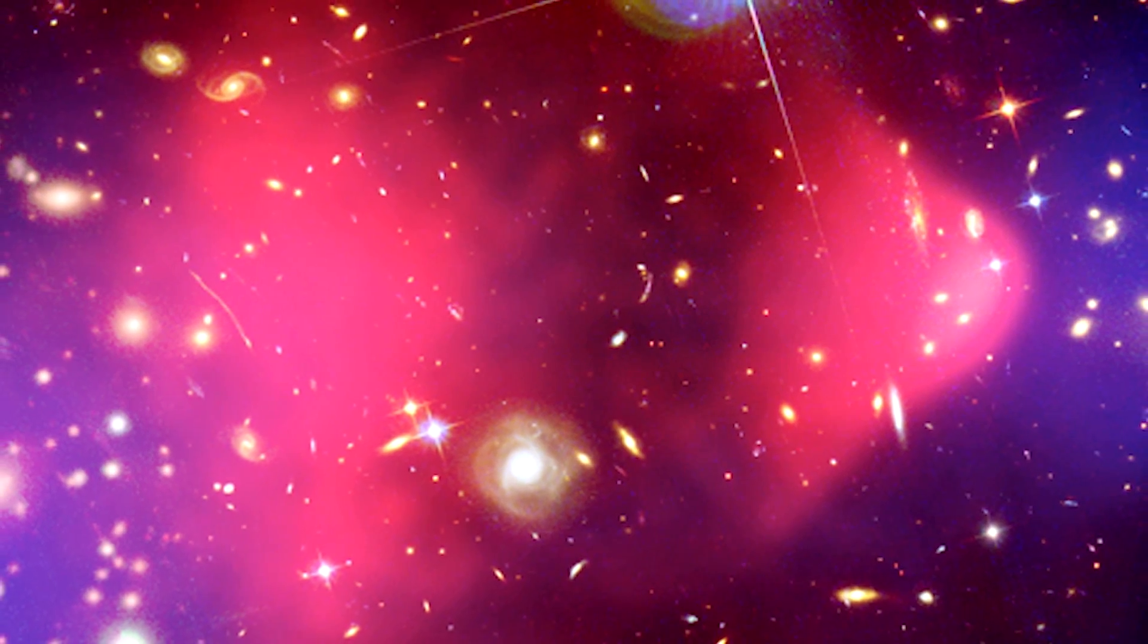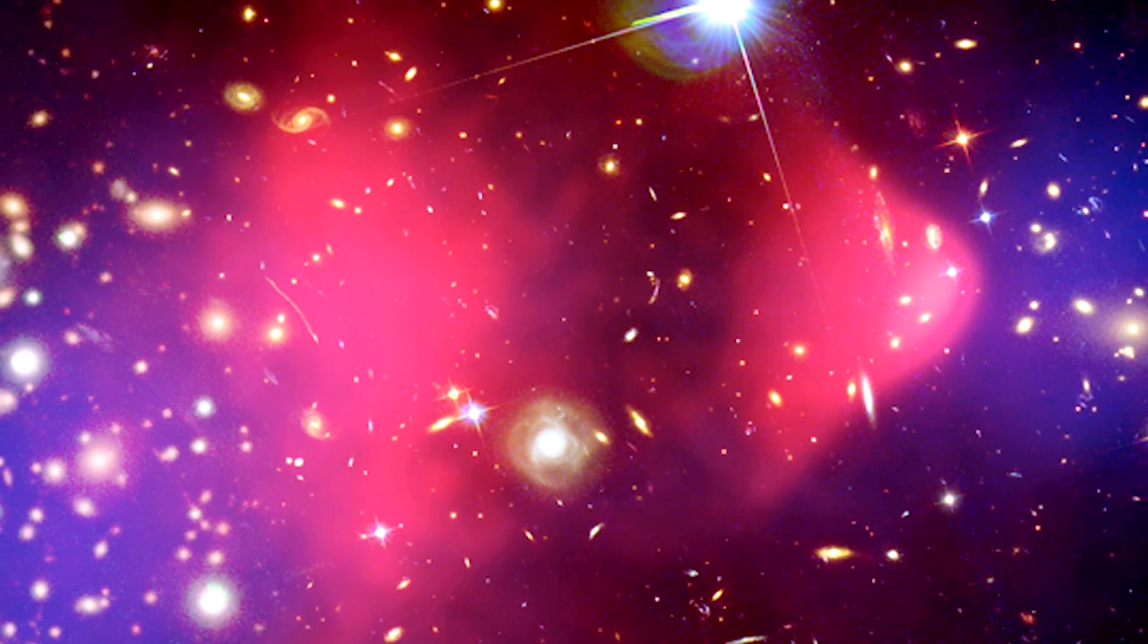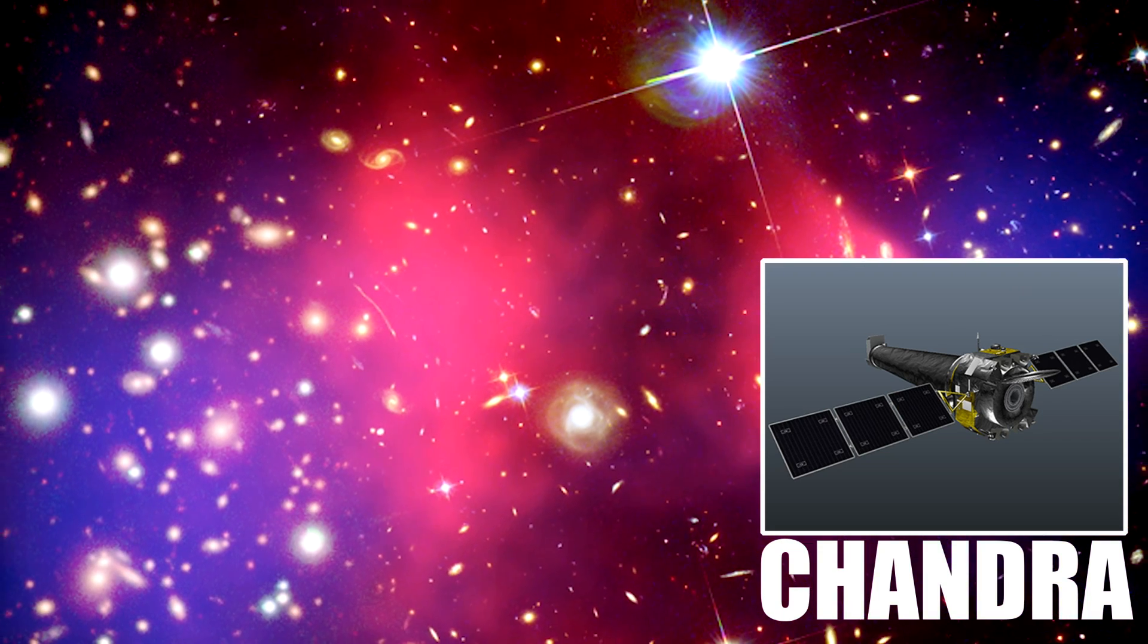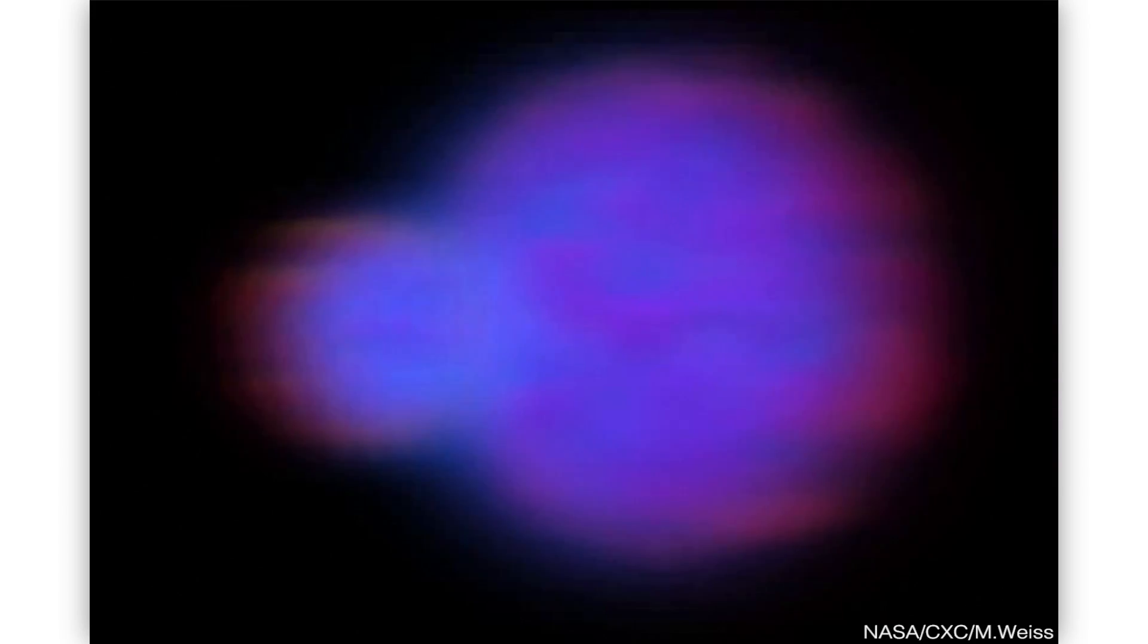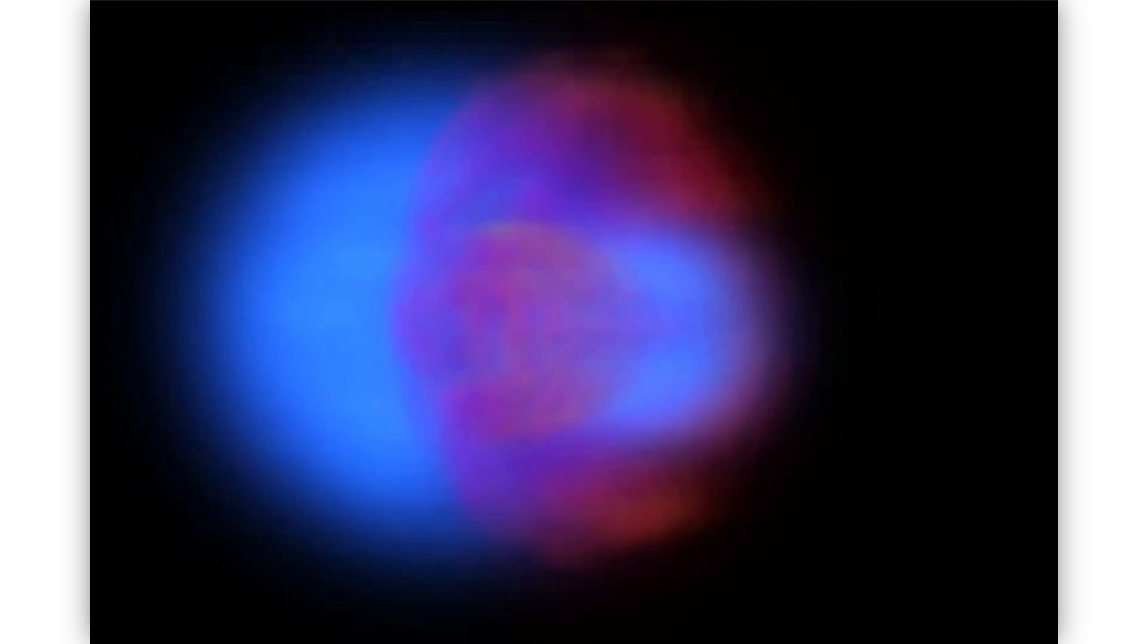What we're seeing in the pink or reddish color is imagery taken by NASA's Chandra telescope. This is a space telescope that observes in the x-ray. Galaxy clusters, because of their huge gravitational potential wells, heat up this gas to millions of degrees Kelvin that shine brightly in x-rays. So you can see this hot gas.